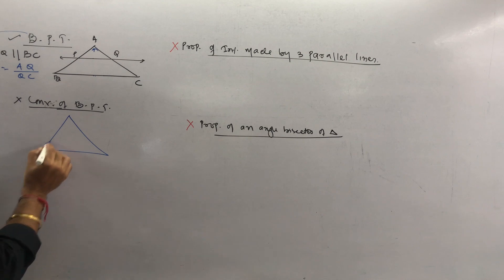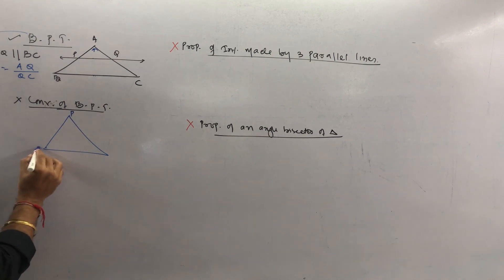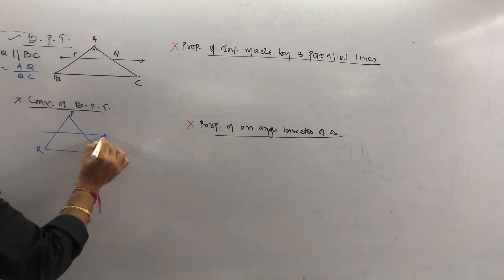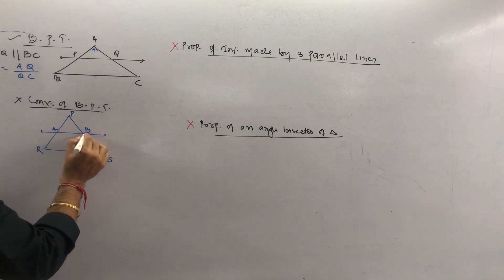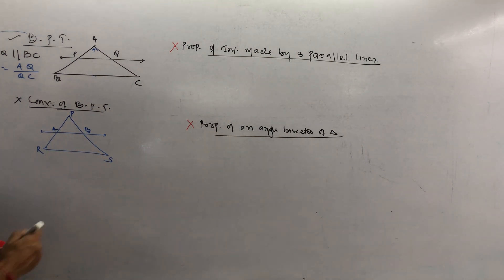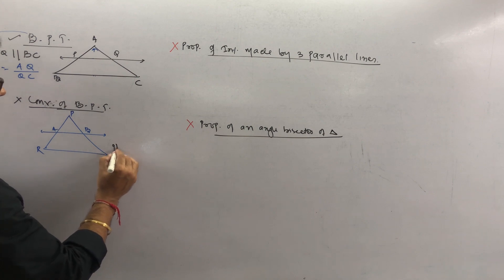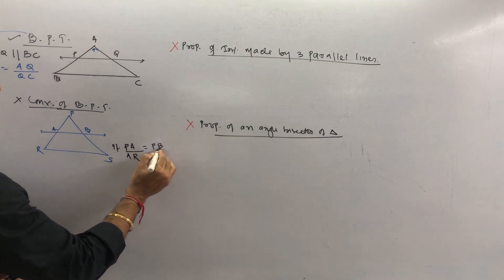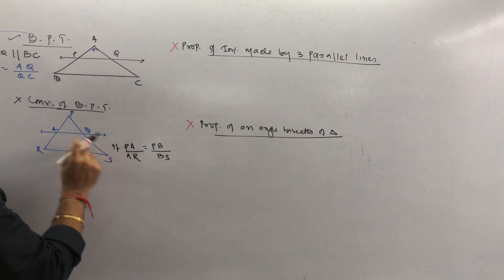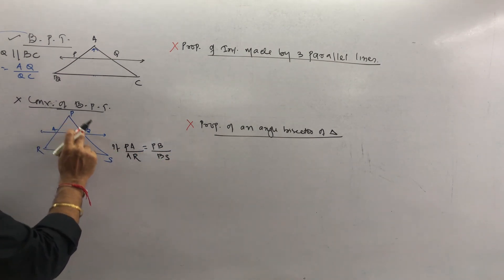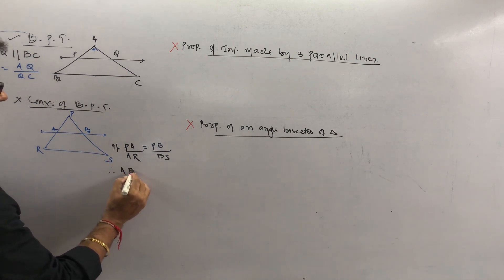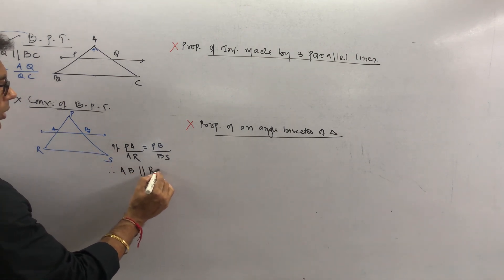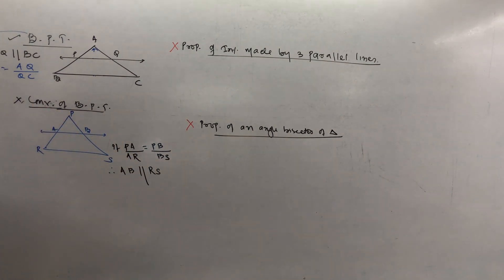The converse is the opposite. If you are given a ratio — that is, PA upon AR is equal to PB upon BS — therefore you should say AB is parallel to RS. That is called the converse of basic proportionality theorem.